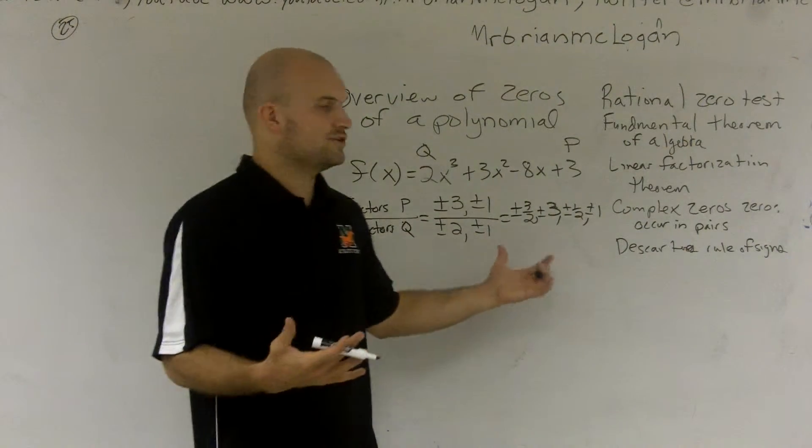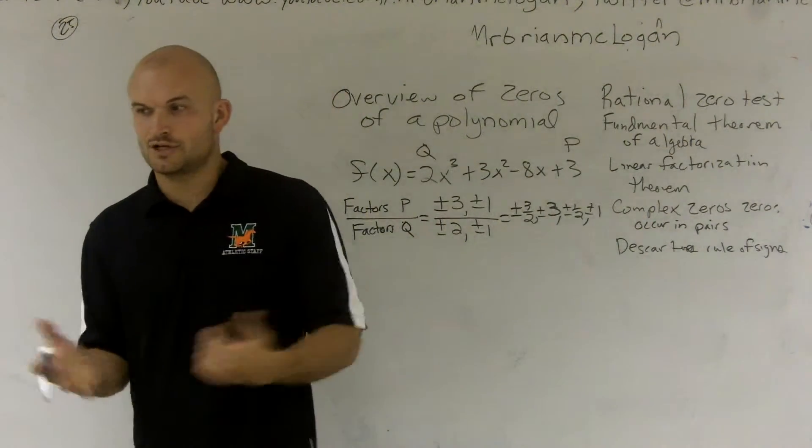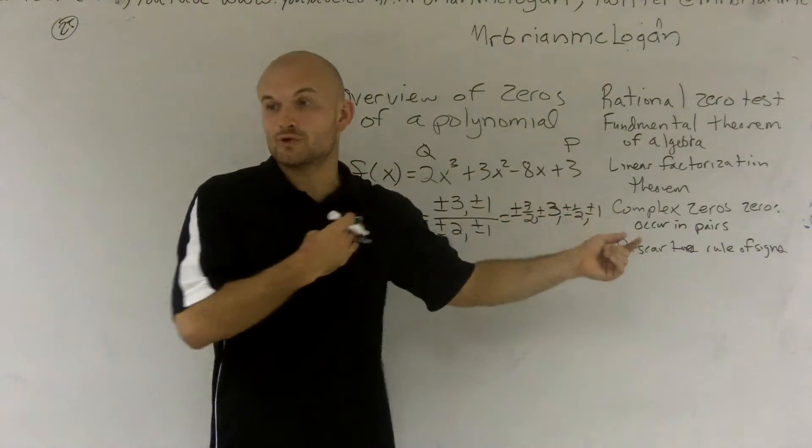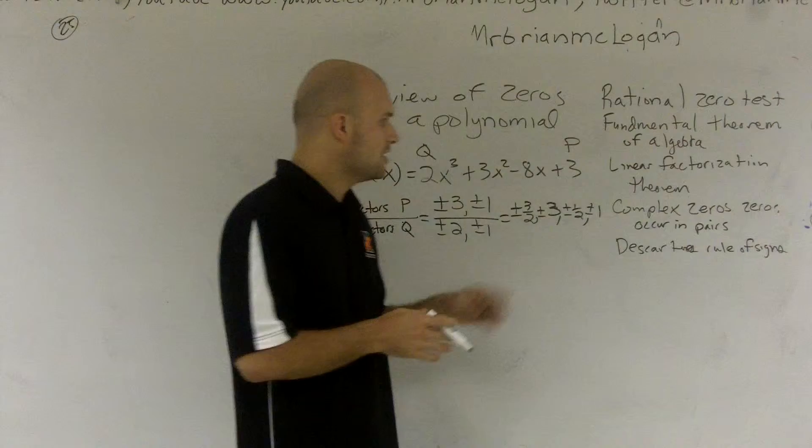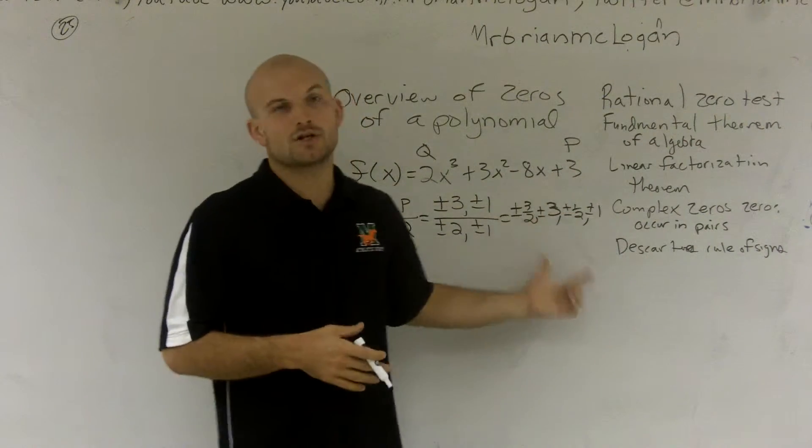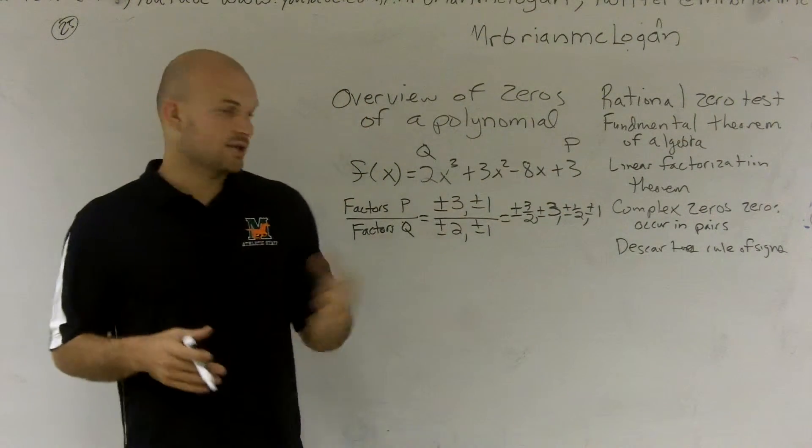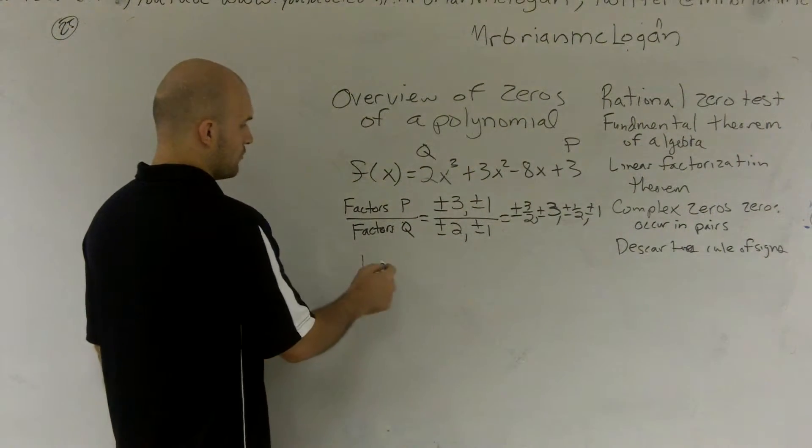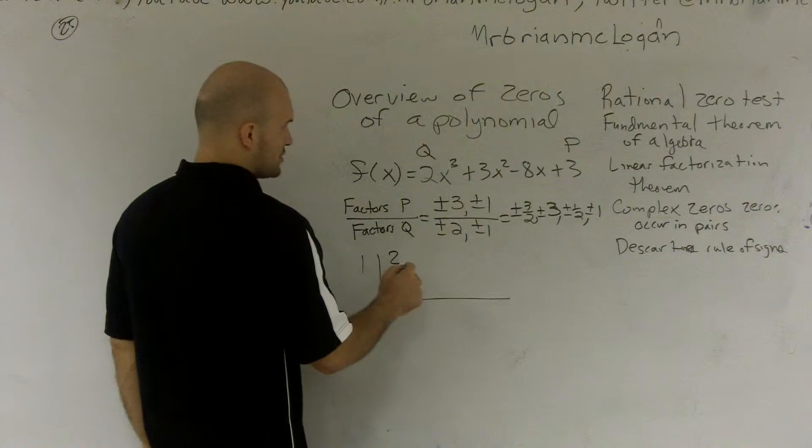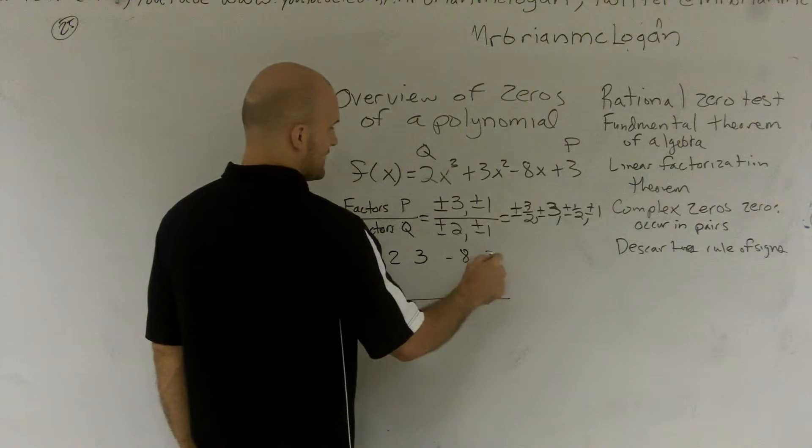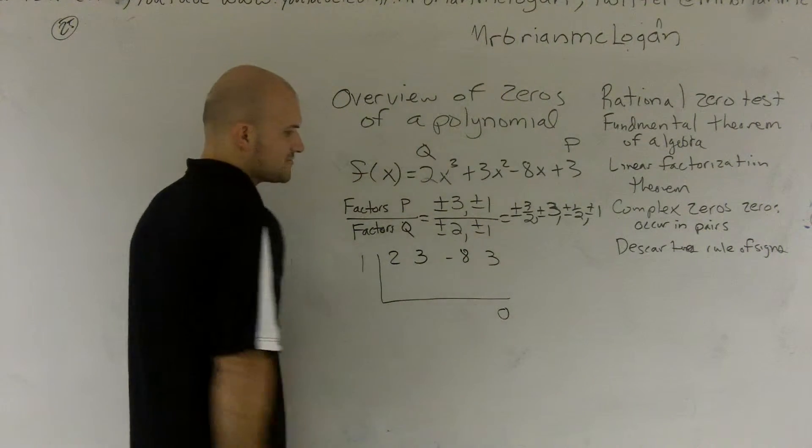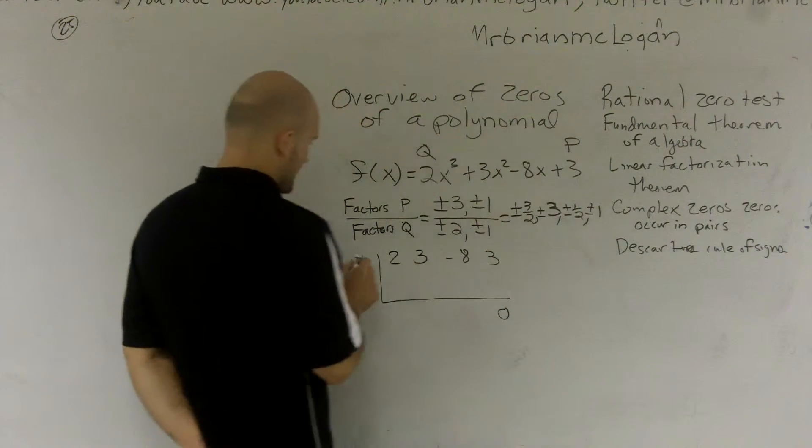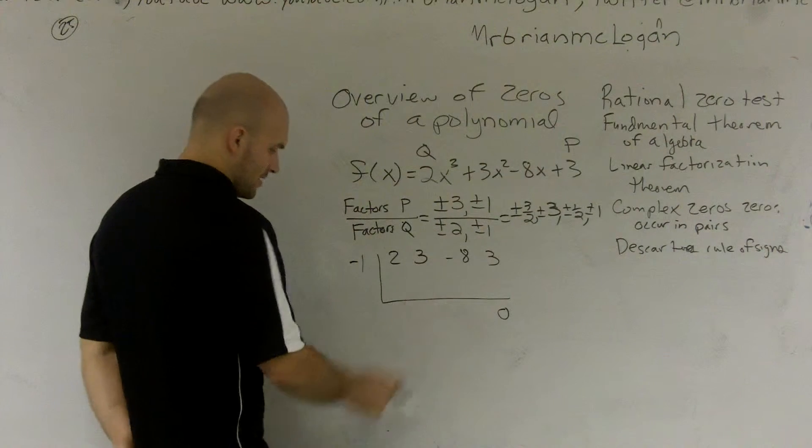Usually what we do is you can graph it and see if one of these numbers is where the graph crosses the x-axis. Then you know it's a rational root. The other way you could test this is using synthetic division. If I take one of these factors, let's say I do 1, and I do 2, 3, -8, and 3, and if I get a remainder of zero, then I know 1 is a zero. The same thing if I did -1, I could test that.